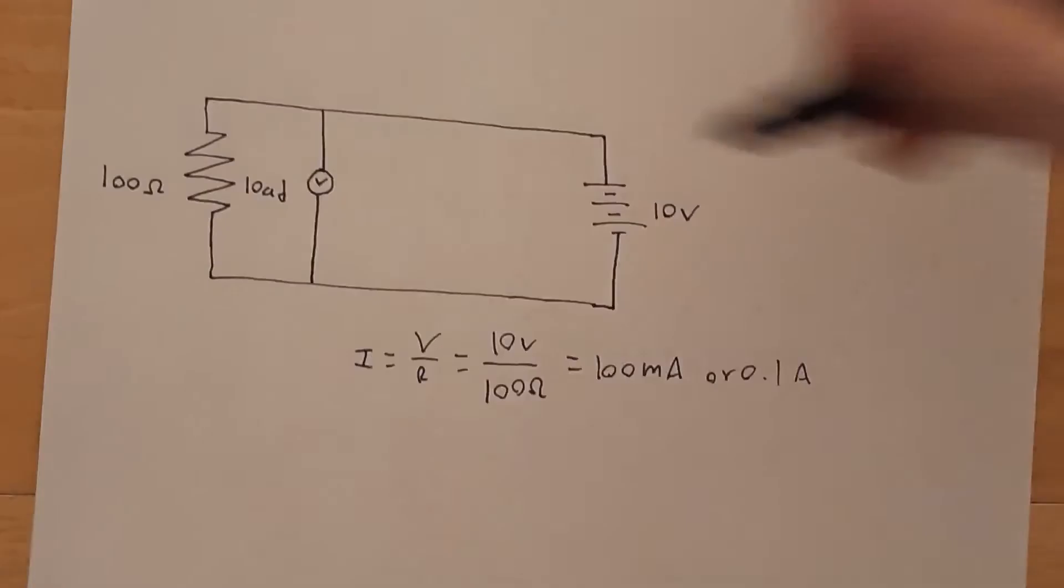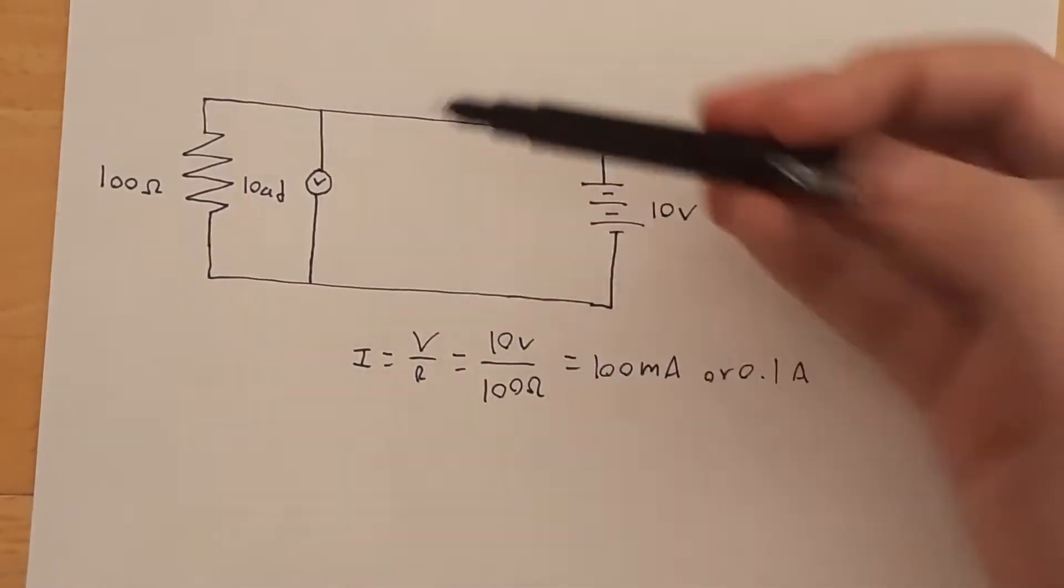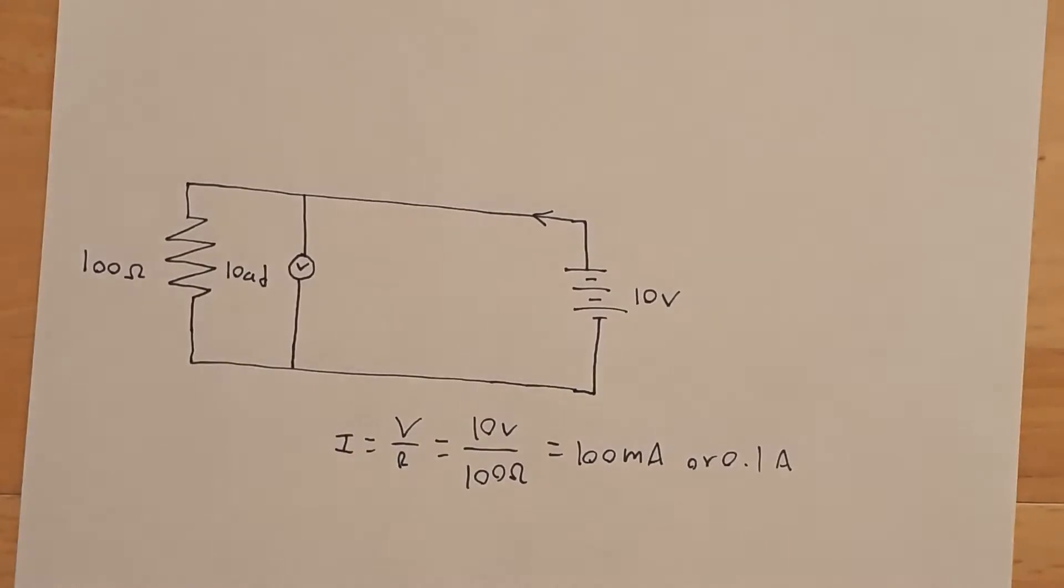If that is current going this way through the circuit into the load, now if we want to measure current, there's essentially two different ways we can do it. We can use a clamp-on meter, which measures the magnetic fields around this wire, or we can use something called a current shunt.